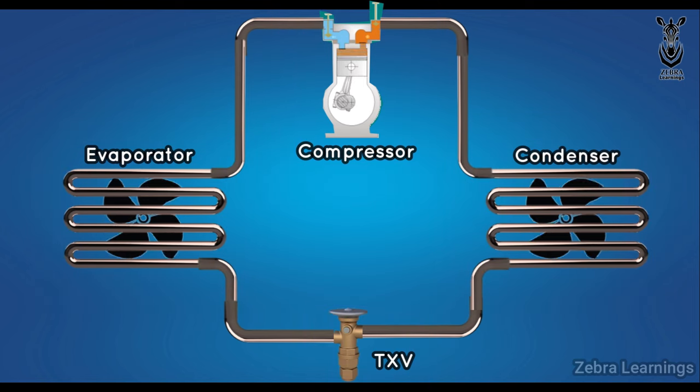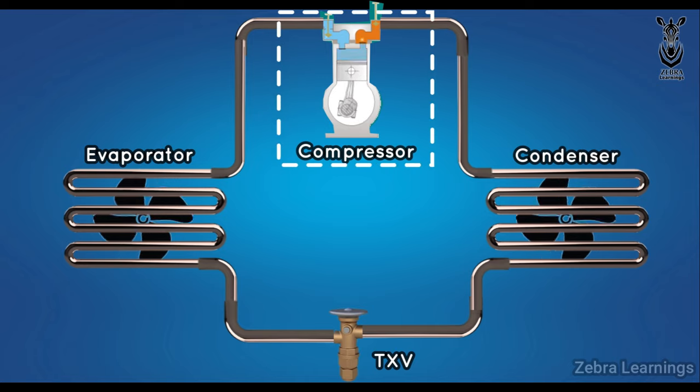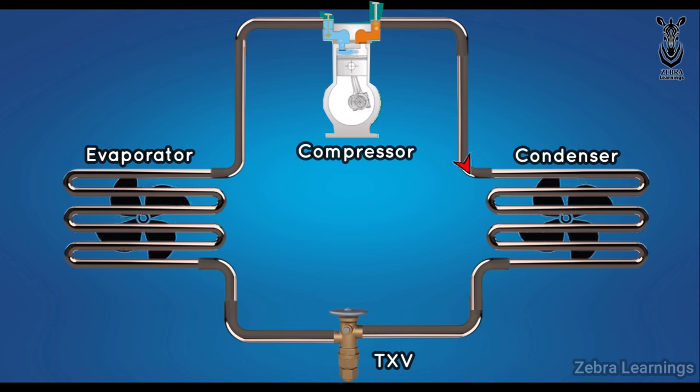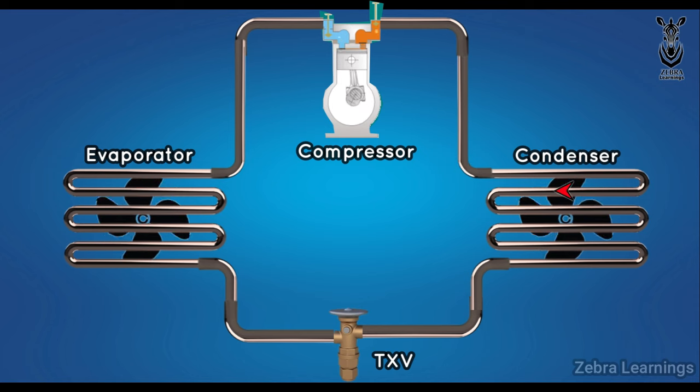First, let's see the compressor. The compressor increases the pressure of the refrigerant. By increasing the pressure of the refrigerant, the refrigerant can travel throughout this cycle.